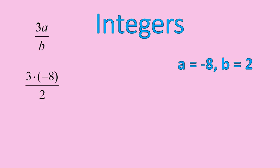3 times 8 is in the numerator, but it's 3 times negative 8, so it will be negative 24. The denominator of 2 remains the same.